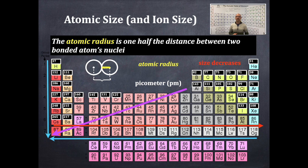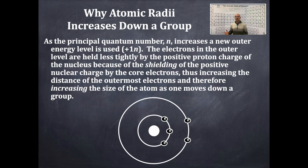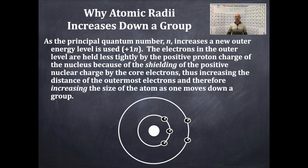Ion sizes follow the same trend. Why does atomic radius increase going down a group? As the principal quantum number n increases — those are the row numbers 1 through 7 — a new outer energy shell is used. The electrons in this outer level are held less tightly by the nucleus because it is shielded by inner electron shells, increasing the distance of the outermost electrons and thus the atomic size.